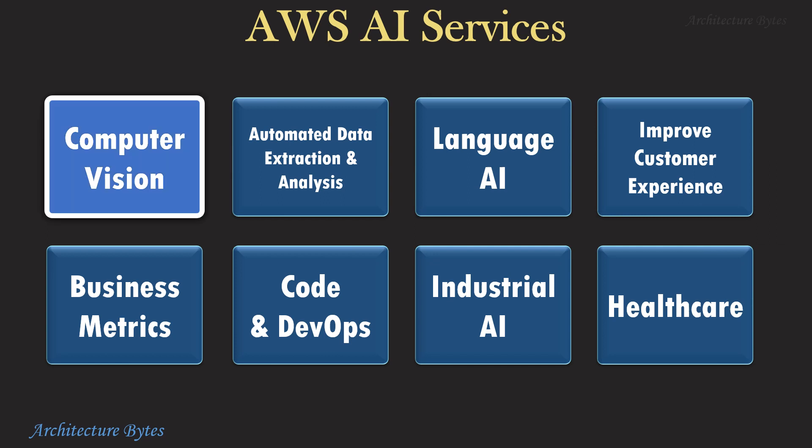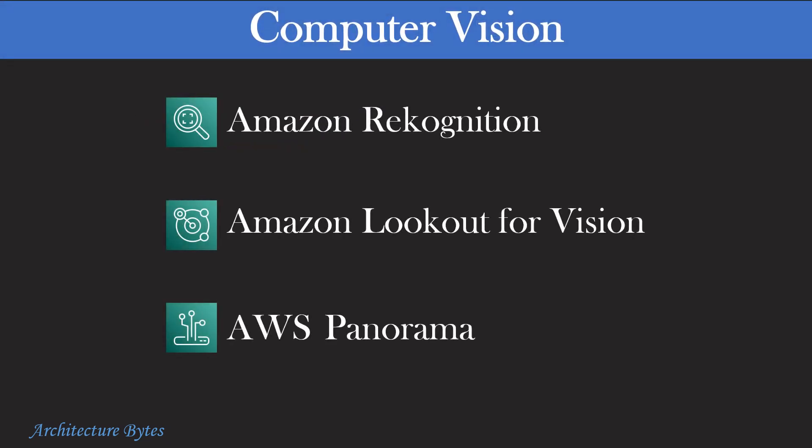Let's begin with Computer Vision. Here we have Amazon Rekognition, Lookout for Vision, and Panorama services.